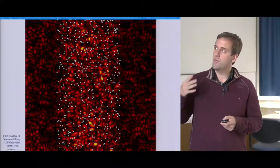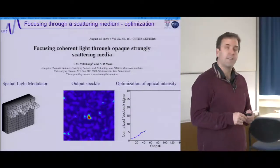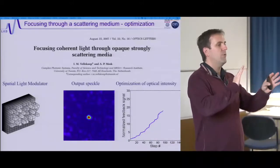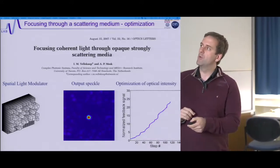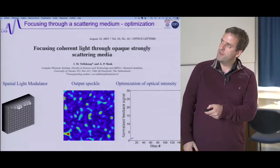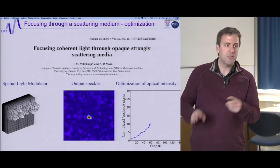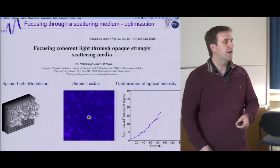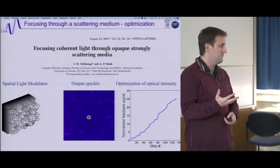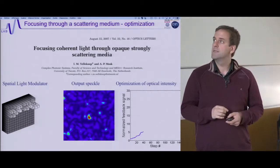What we covered last time was the possibility to use wavefront shaping as a tool to control this light. By using a spatial light modulator I can send a controlled wavefront rather than a plane wave, and I'm able to modify the speckle in a deterministic way. Starting from a speckle and optimizing the intensity of a point, I end up with a very strong, diffraction-limited focus through my disordered medium.